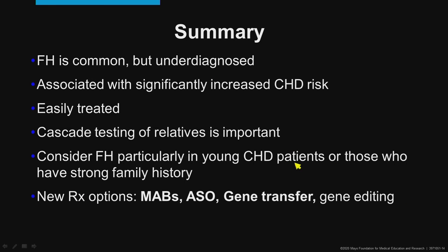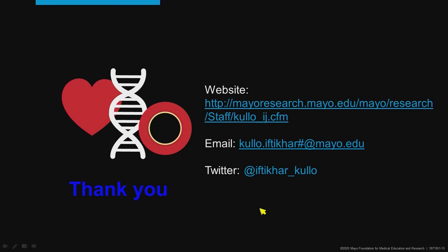In summary, FH is common but underdiagnosed and undertreated. It is associated with significantly increased risk; however, the risk can be mitigated by treatment such as with easy-to-obtain generic therapy with statins. Cascade testing of relatives is important for early detection and treatment. We should suspect FH in patients who present with CHD at an early age or who have a strong family history of hypercholesterolemia or premature CHD. There are very exciting new therapeutic options available: monoclonal antibodies, antisense therapy, gene transfer, as well as gene editing. Thank you for your attention, and if there are any questions, please do not hesitate to contact me at my email address.